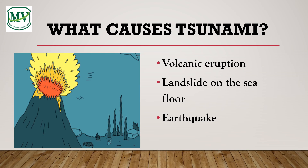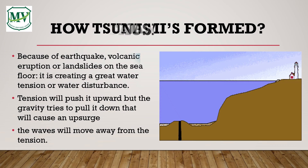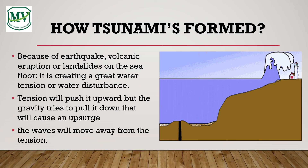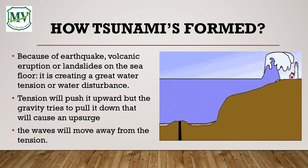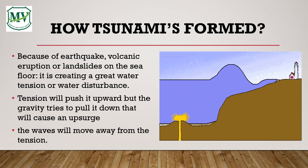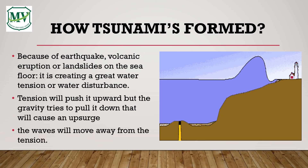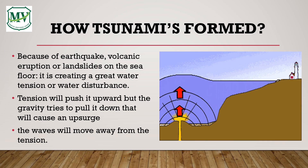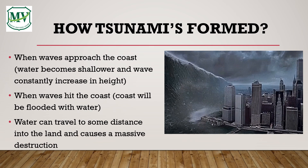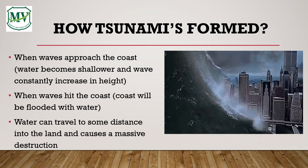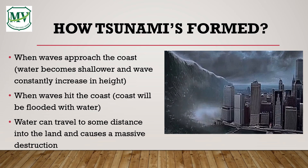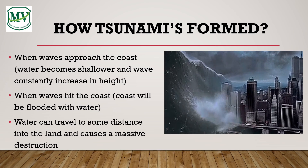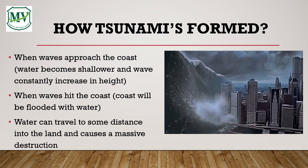How do tsunamis form? Because of earthquake, volcanic eruption, or landslides on the seafloor, any of these three events will create a great water disturbance or water tension. That tension will push the seawater upward, but because gravity tries to pull it down, that will cause an upsurge. The waves will move away from the tension. When waves approach the coast, the seawater and waves constantly increase in height. When waves hit the coast, the coast will be flooded with water, which can travel some distance into the land and cause massive destruction.